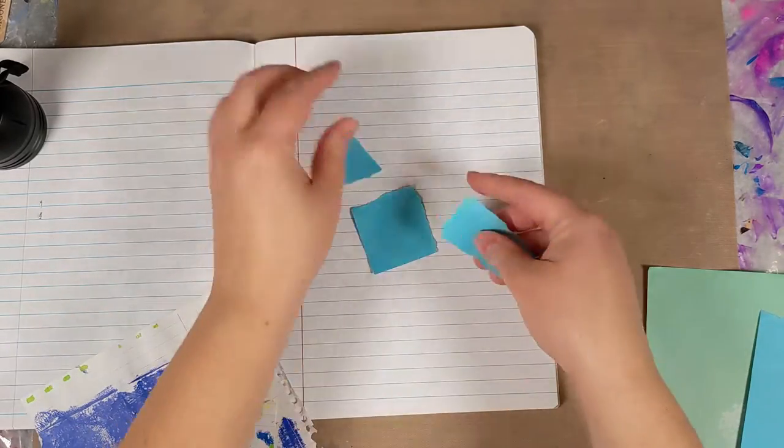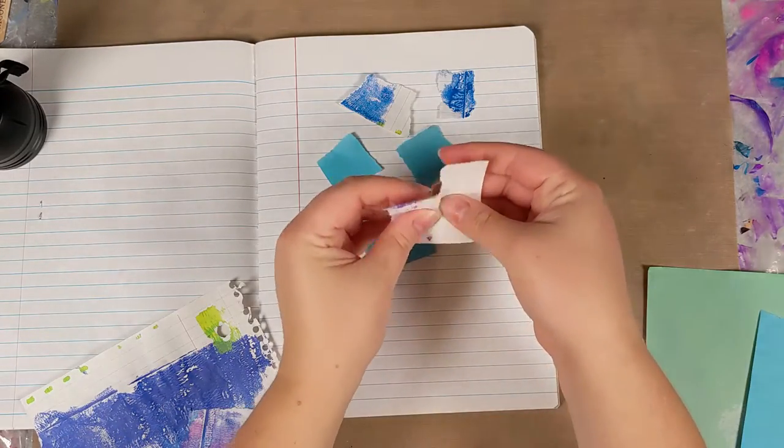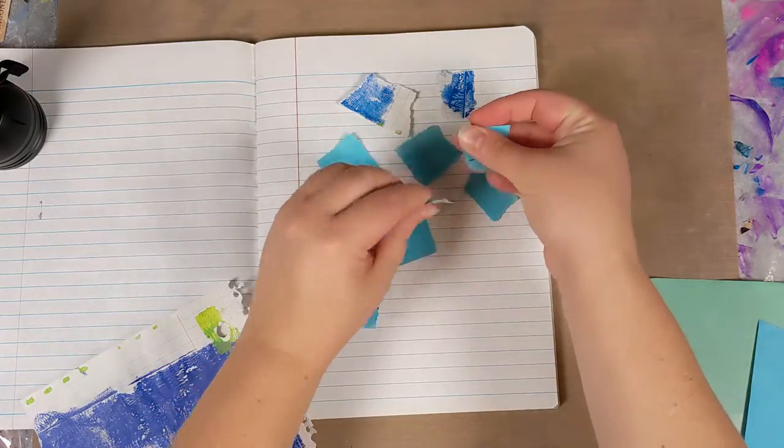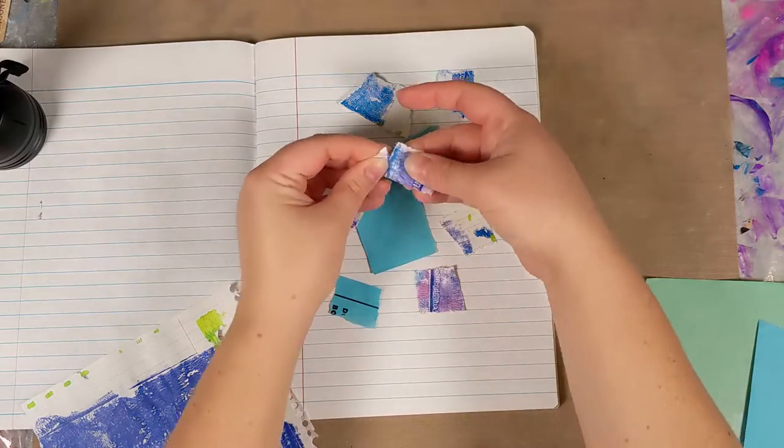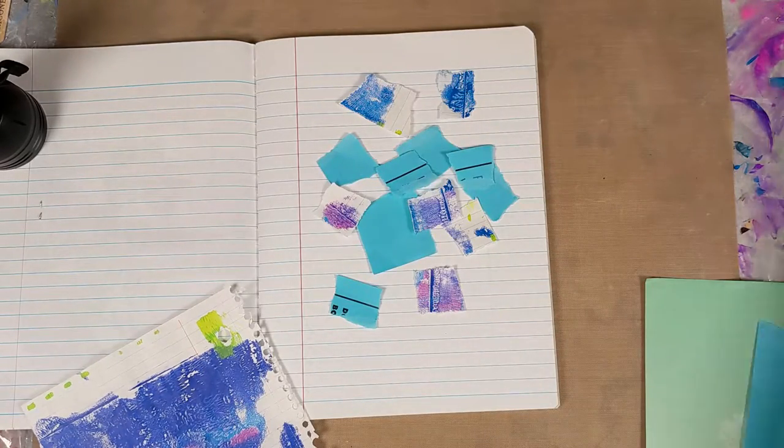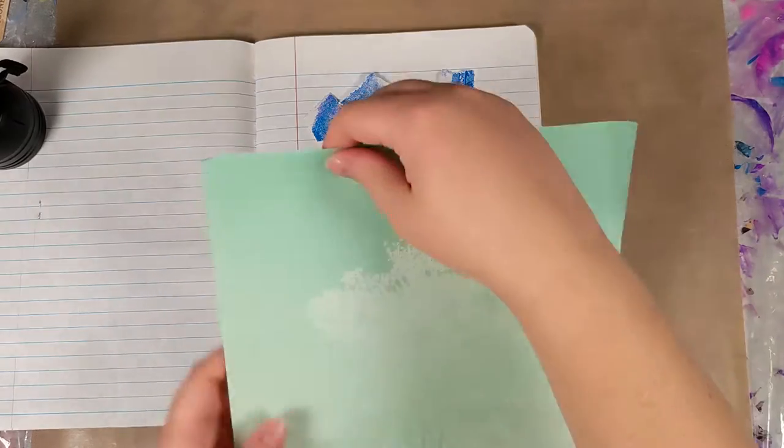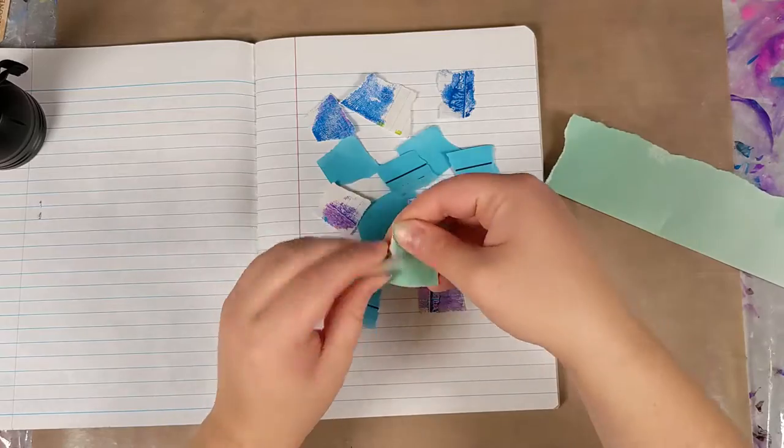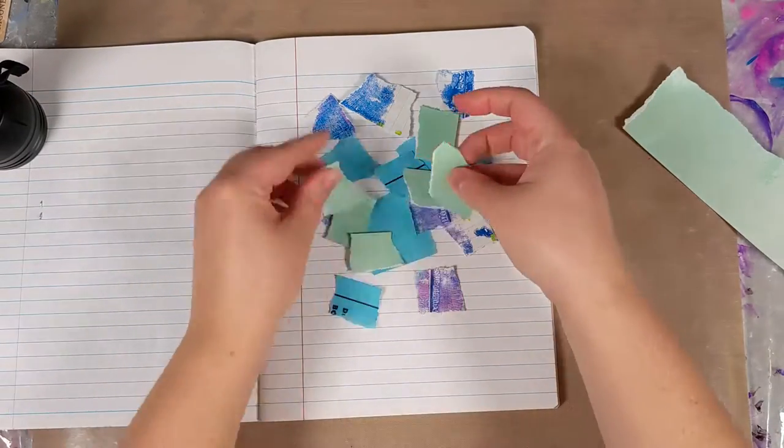You'll want to start by first ripping up little squares or any other shapes of your paper, or if you don't like the process of ripping you can use scissors or anything similar. Basically you just want a lot of little pieces of paper because we're going to do a collage with these. You can do as many as you want and I would suggest doing a little bit more than you think you need because then you have some different shapes and stuff to play around with.